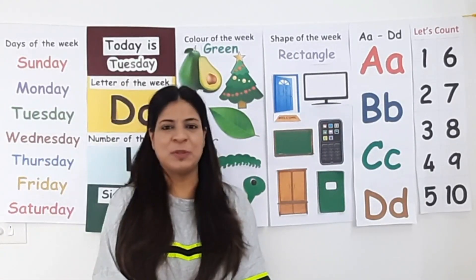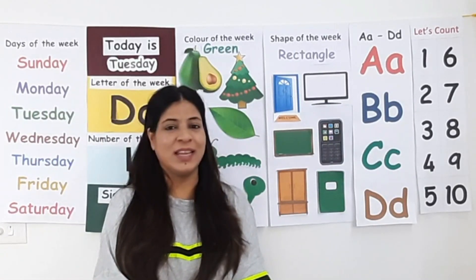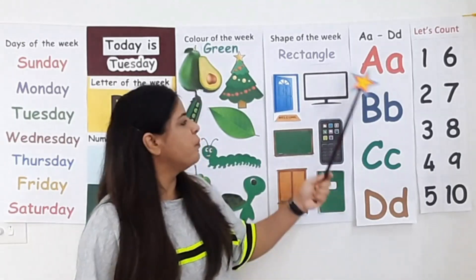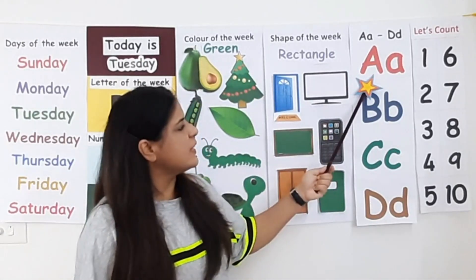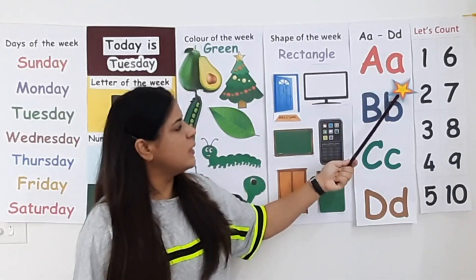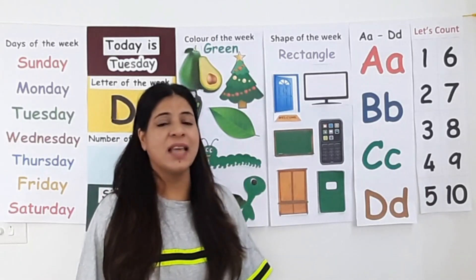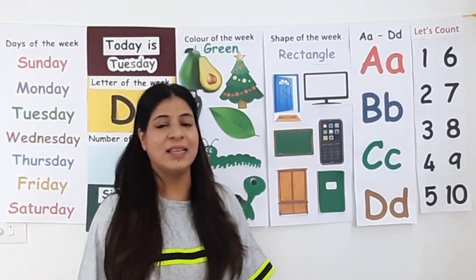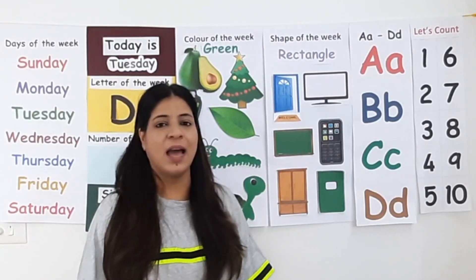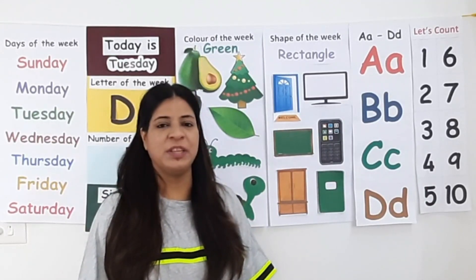Now it's time to say the sound of letters A, B, C, D. Let's start. This is uppercase letter A. This is lowercase letter A. Letter A makes the sound A. Repeat after me: A.